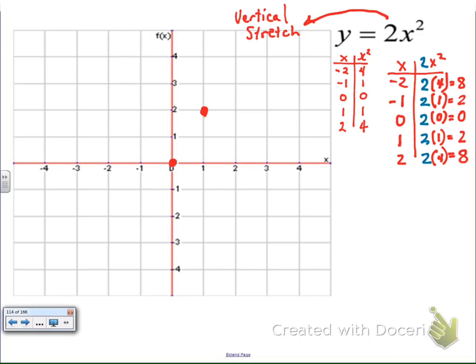Well, we're going to go over 1, up 2 to get our first point from the origin instead of over 1, up 1. And we get another one on the other side for symmetry and we create a parabola. We label our points. So, that's a vertical stretch.